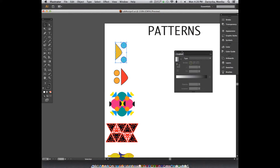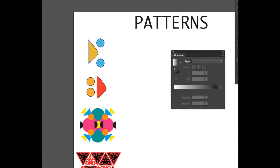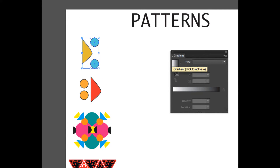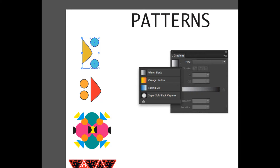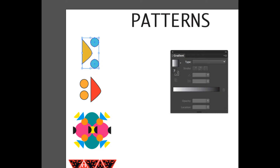By default you get a white-to-black gradient. You have several options here, and if you see that little arrow — the chevron — on the side, click it and you'll get some presets to choose from. By default, anytime I start a gradient I go back to black and white unless I want something else. On the side you also have the type of gradient. Notice when I selected the shape, those shapes are grouped, so applying a gradient may not work well directly.